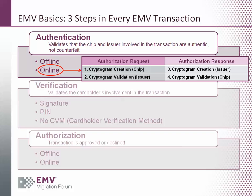What we're going to talk about in this presentation is the online method of authentication. Think about this in four main steps. The first two steps take place in the authorization request, where the cryptogram is created by the chip and then later validated by the issuer. And then in the authorization response, the issuer creates the cryptogram and that cryptogram is later validated by the chip. It's through these four steps that an EMV transaction is made very secure.